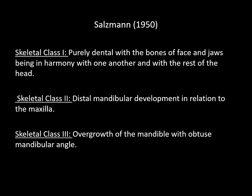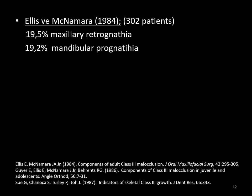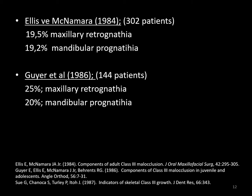Class 3 occlusion was related to mandibular prognathia until the 1960s. In 1966, Tweed classified Class 3 occlusion into two categories: Category A was defined as pseudo Class 3 occlusion, and Category B was defined as skeletal Class 3 occlusion with a large mandible or an underdeveloped maxilla. In the 1980s, various researchers evaluated the skeletal pattern of patients presenting Class 3 occlusion and reported that this malocclusion was not only related to the mandible.